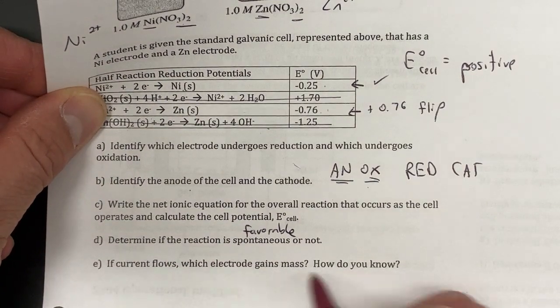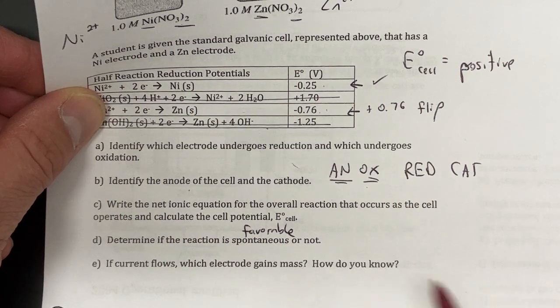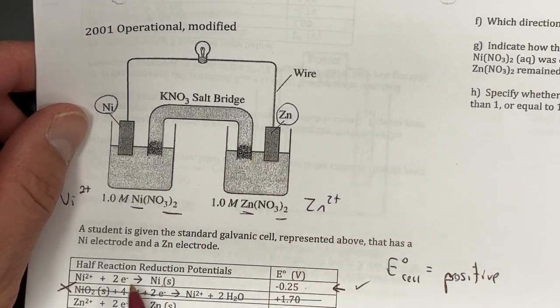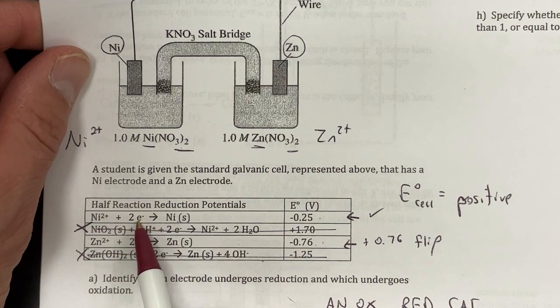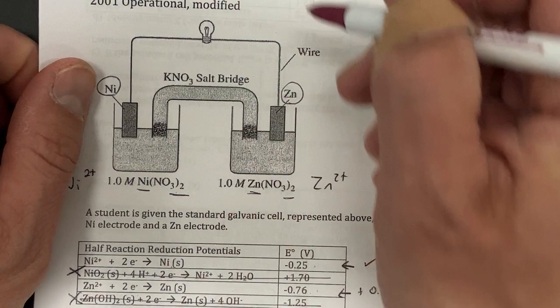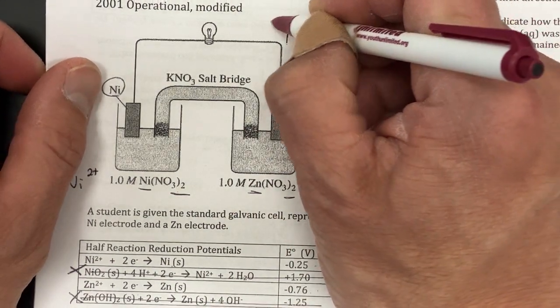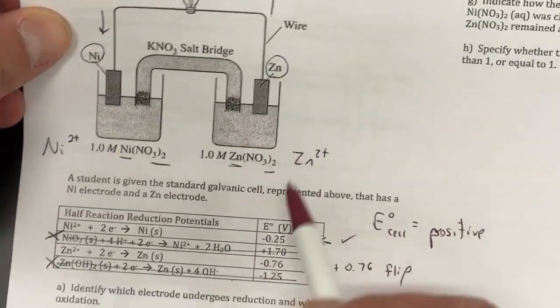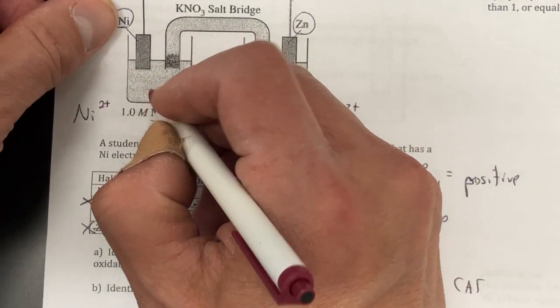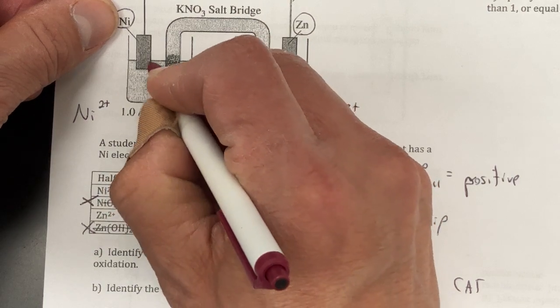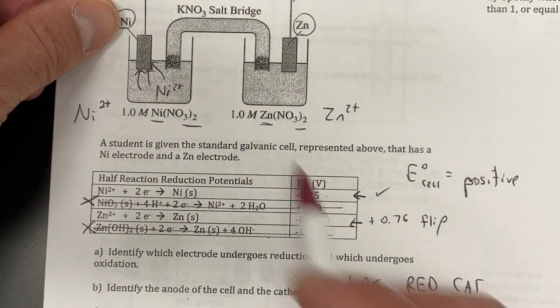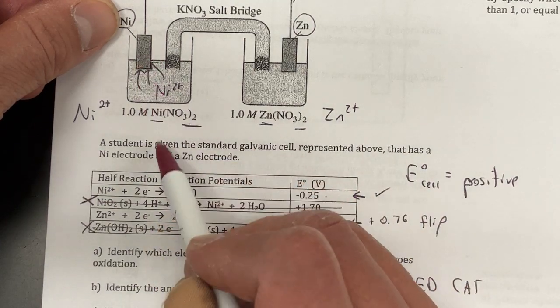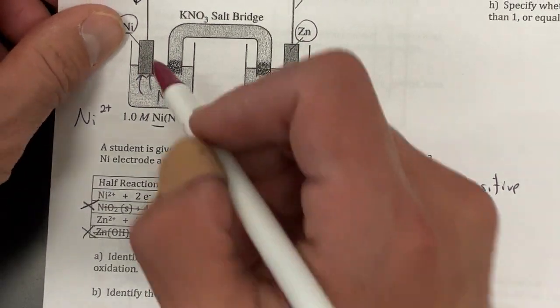E, if current flows, which electrode gains mass and how do you know? Well let's do this first. So what direction are my electrons moving? Well my nickel here is gaining electrons, and so my zinc has to lose electrons, and so it's going to move in this direction. So electrons are going to move in this direction, and as they gain electrons over here, what's happening to my nickel? Well I'm going from nickel solution, Ni²⁺, and that's going to get deposited onto this electrode here and form a solid. So which one gains mass? Well the nickel one is going to gain some mass because that's going to start depositing on there.